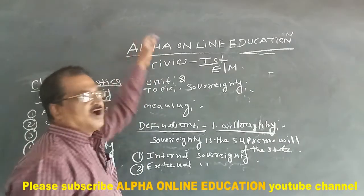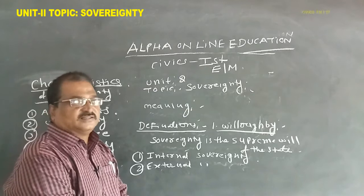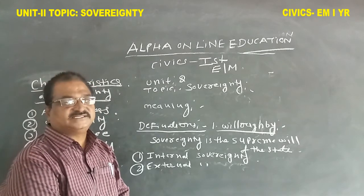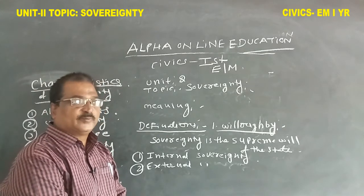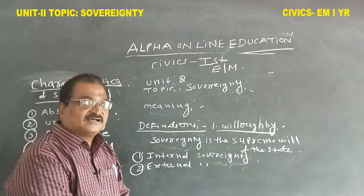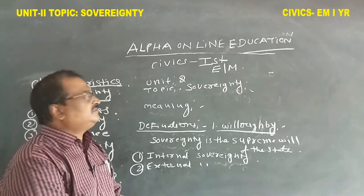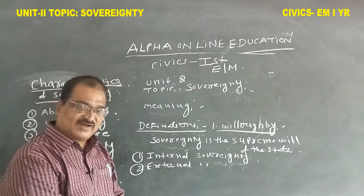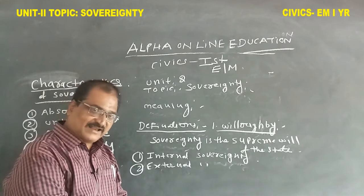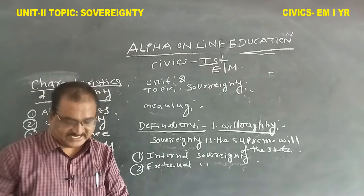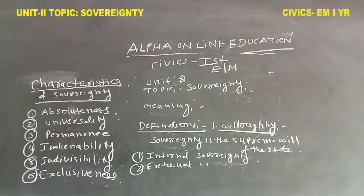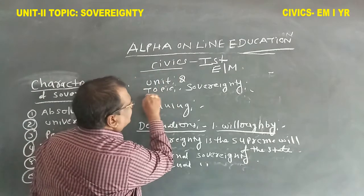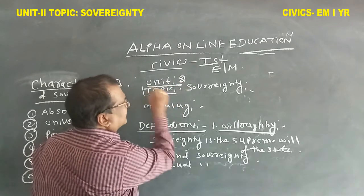Welcome to Alpha Online Education. This is first year civics or political science. In the previous video, we completed the essential elements of the state: population, territory, government, and sovereignty. Here, unit number two topic is sovereignty.